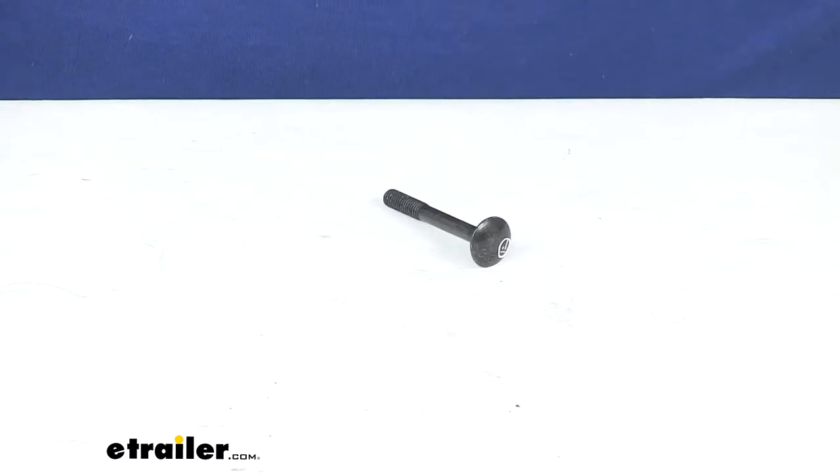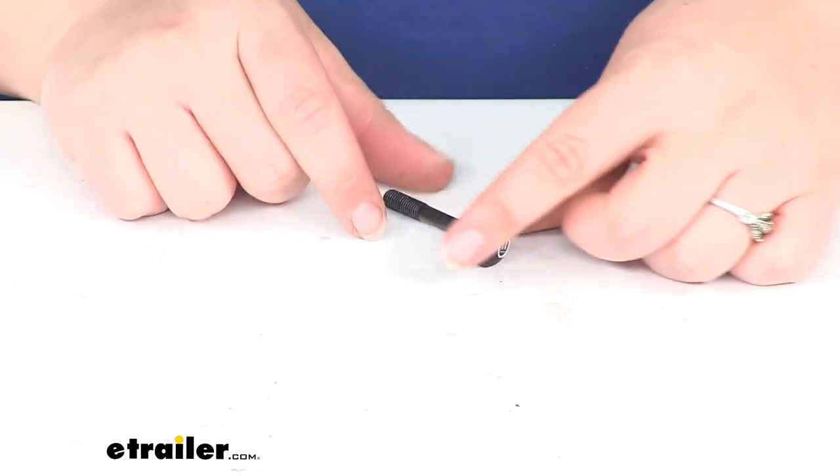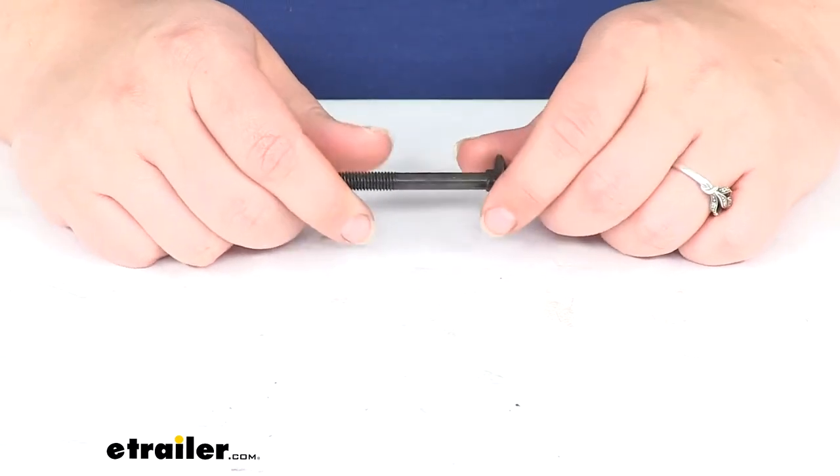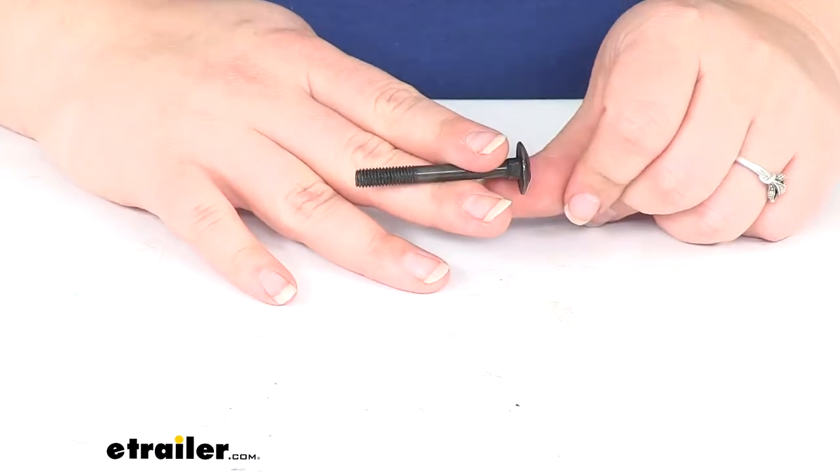Hey, everyone. I'm Ellen here at eTrailer.com, and today we're taking a really quick look at the replacement M6x50 carriage bolt for Thule carriers.